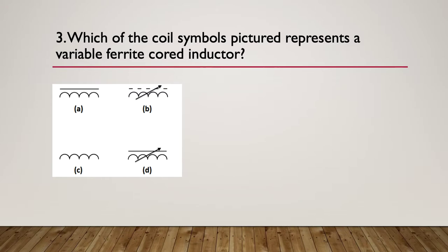Three: which of the coil symbols pictured represents a variable ferrite core inductor? Again, pause here. Here's the hint: which parts of the symbol represent the types of cores or the core types?